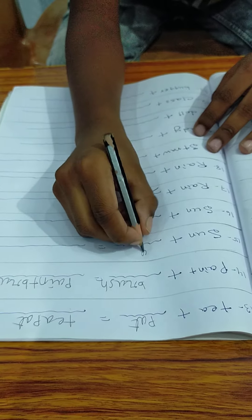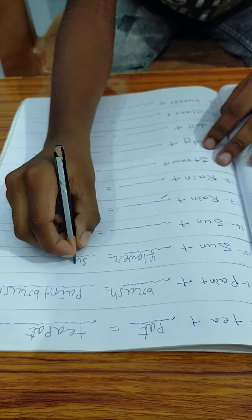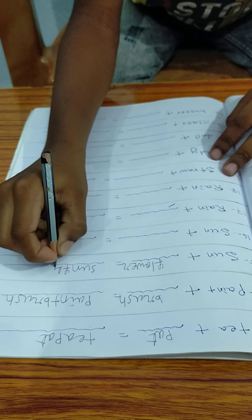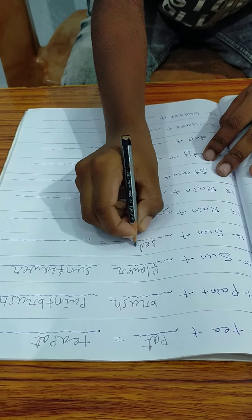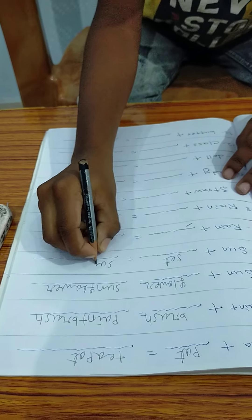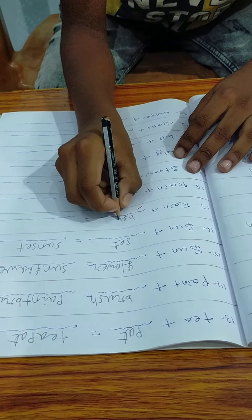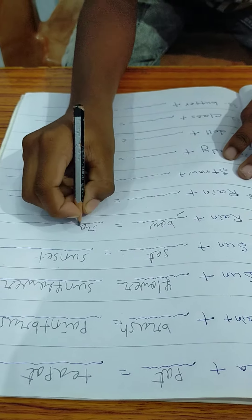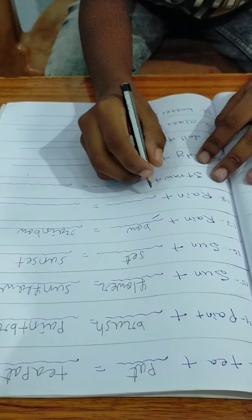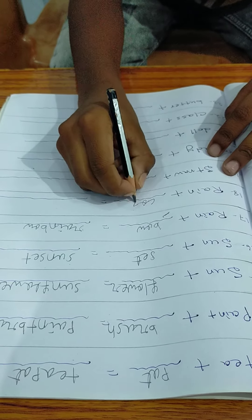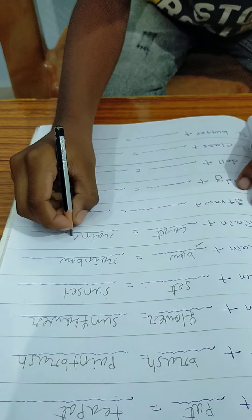Sunflower. F-L-O-W-E-R, flower. S-U-N, sun. Flower. Sunflower. Sunset. S-U-N, sun. S-E-T, set. Sunset.